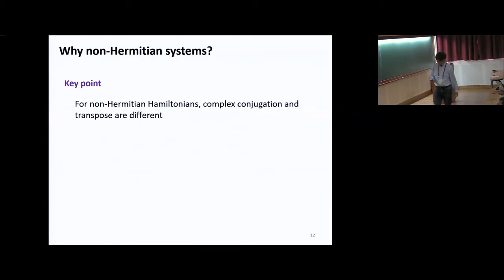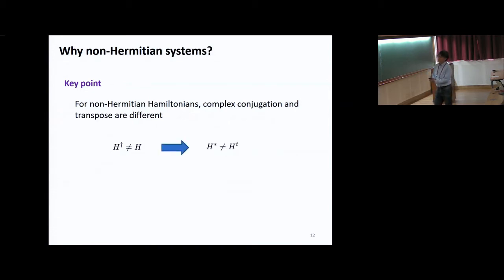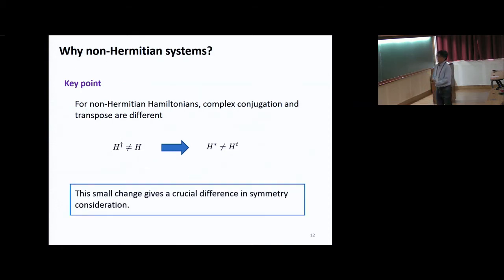The key property is the following. For non-Hermitian Hamiltonians, the complex conjugate and the transpose are different. That is, the Hermitian conjugate of the Hamiltonian is not the same as the original Hamiltonian. By taking the transpose of these relations, we have distinct relations — the complex conjugate is not the same as the transpose. This is a very small change of the symmetry. However, we find that this small change gives a crucial difference in symmetry considerations.